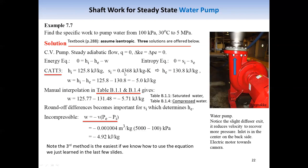For the second method, we follow the same approach just discussed, but we extract these numbers based on tabulated data, and interpolation will most likely be needed. We can dig out the two properties from this table, and then from entropy and pressure we can find the exiting stream enthalpy. Then from the first law, same as the first approach, we can estimate the work.